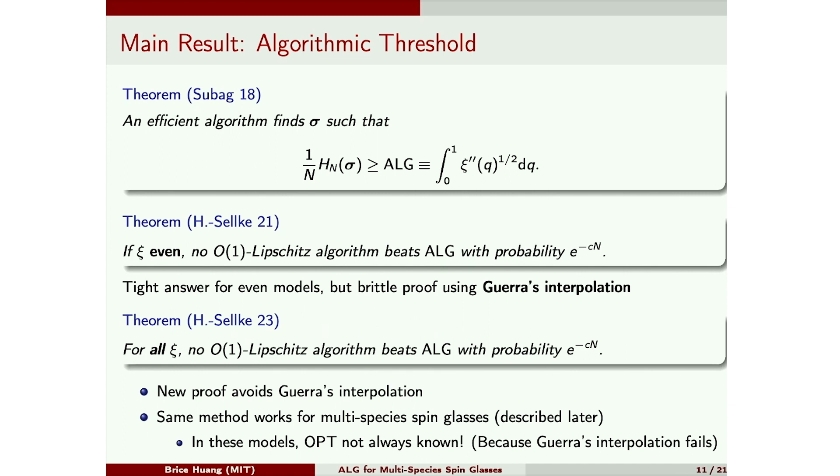So we're thinking of an algorithm as a function. So like, your algorithm gets the list of disorder Gaussians, and from that it outputs a point. And we're just asking if this map is Lipschitz.